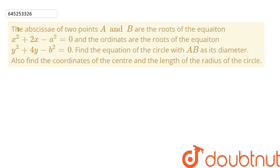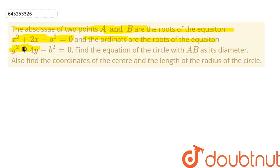In this question, the abscissae of two points A and B are the roots of the equation x² + 2x − a² = 0, and the ordinates of points A and B are the roots of the equation y² + 4y − b² = 0. We need to find the equation of the circle with AB as its diameter, the coordinates of the center, and the length of the radius.